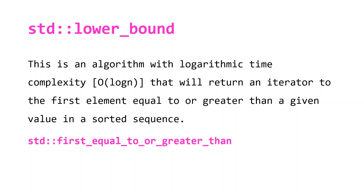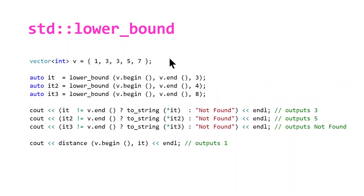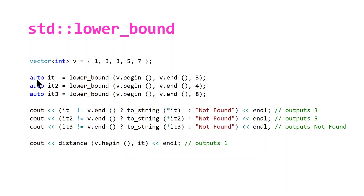I like to think of this function as 'first equal to or greater than' — that's essentially what lower_bound means. Here we have a vector of integers with two threes, and we create three iterators using the lower_bound function. The first iterator points to the first three, outputting three, and we can verify it's not the second three by calling the distance function, which outputs one, not two. The second iterator searches for four; since there's no four, lower_bound outputs five. And because there's no element equal to or greater than eight, it outputs 'not found'.